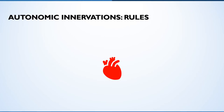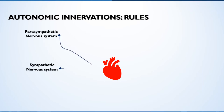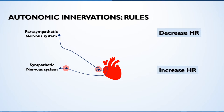Many body organs receive dual innervation, i.e., fibers from both sympathetic and parasympathetic divisions. Usually, these two divisions have opposite effects on a given organ, such as one causes a decrease in heart rate while the other causes excitation. Point to remember: the balance between two activities is regulated by centers in the hypothalamus.